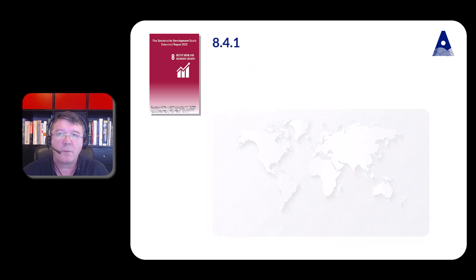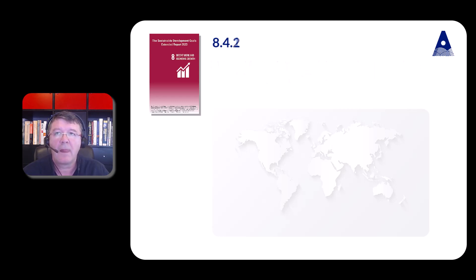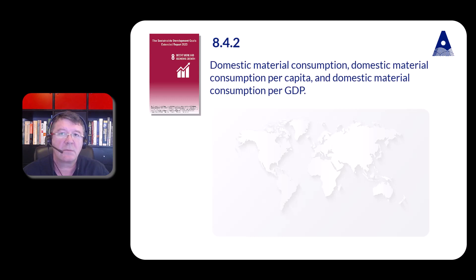Indicator 8.4.1, which is also identical to Indicator 12.2.1, covers material footprint, material footprint per capita, and material footprint per GDP. Indicator 8.4.2, which is also identical to Indicator 12.2.2, covers domestic material consumption, domestic material consumption per capita, and domestic material consumption per GDP.